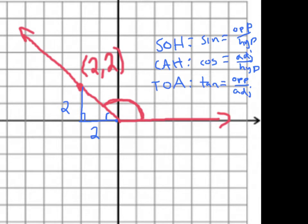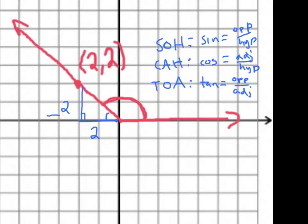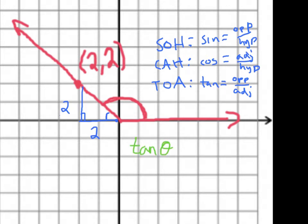We're trying to find that angle and we are given two sides: this side is 2 (the opposite side) and this side is 2 (the adjacent side). Since we have opposite and adjacent, we use tangent. So tangent of theta equals the opposite over the adjacent: 2 over 2. To solve for theta, we use the inverse tangent function. On your calculator, hit the second button above the tangent key. The inverse tangent of 1 (since 2/2 = 1) gives us theta equals 45 degrees.